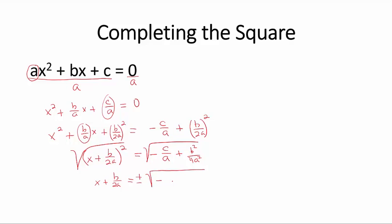If we want to have the same denominator, we multiply the first term by 4a, both the numerator and the denominator.